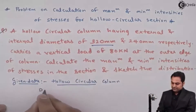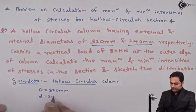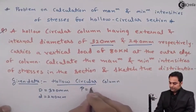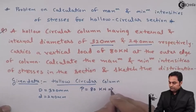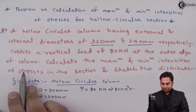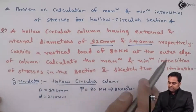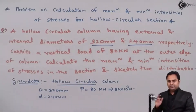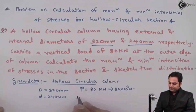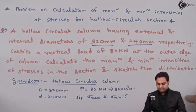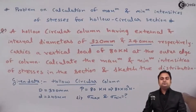The column carries a vertical load of 80 kilonewton (P = 80×10³ N) at the outer edge of the column — that is nothing but eccentricity. We need to calculate maximum and minimum intensities of stresses, sigma max and sigma min, and sketch the stress distribution diagram.